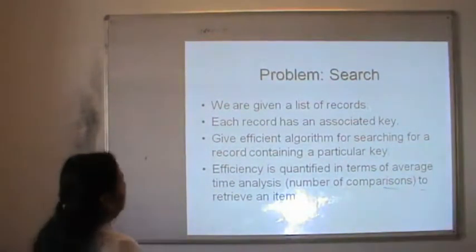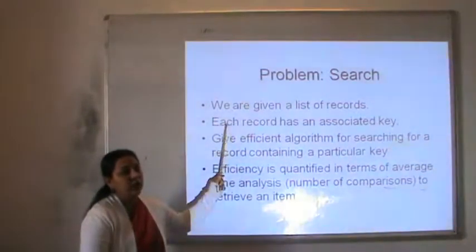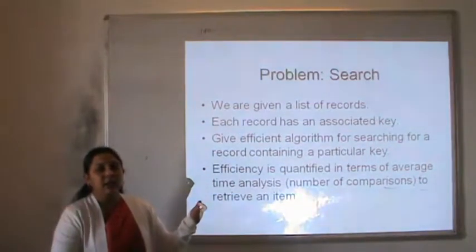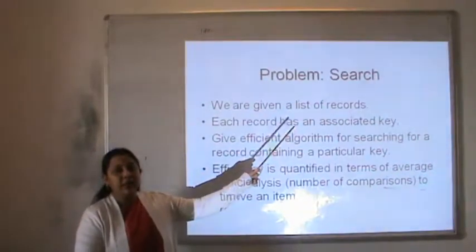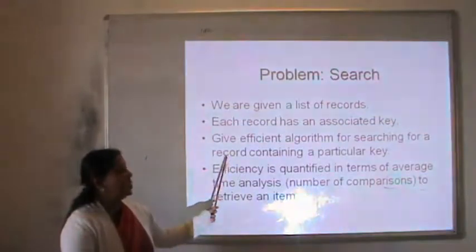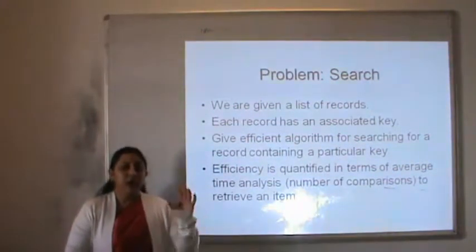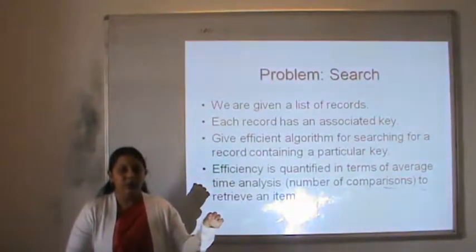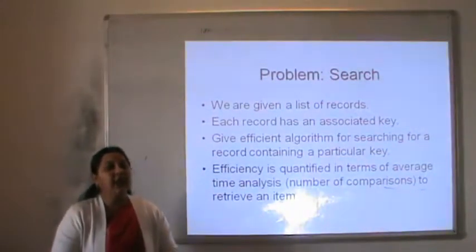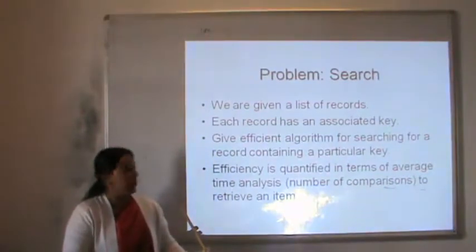The problem is searching for an element from a list of records. We are given a list of records and each record has an associated key. We have many records in a file, and each record is identified by a particular attribute called a key. The problem is to find an efficient algorithm for searching records containing a particular key.